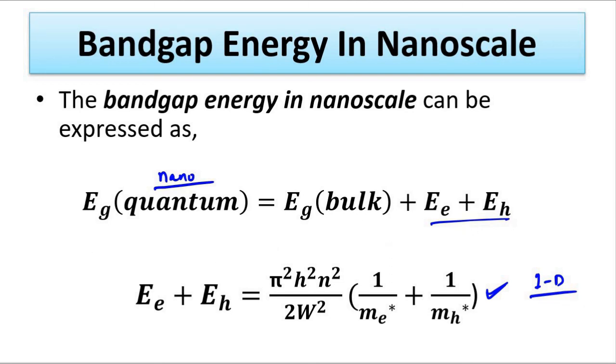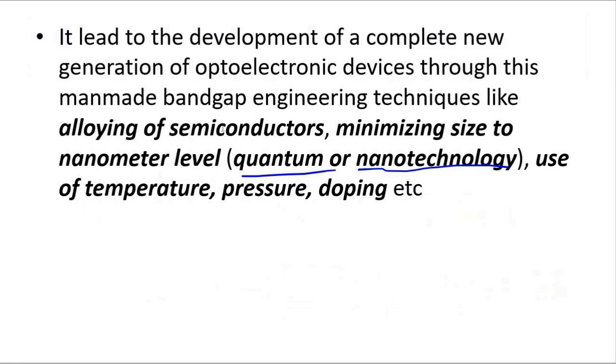This is the basic principle. We have now covered all the band gap modulation methods: alloying or compound semiconductors, nanotechnology or quantum size effect, and the use of temperature, pressure, and doping, that is extrinsic semiconductors. I hope you liked this video. Please subscribe to my channel Engineering Tutorial for more videos related to engineering, science, and technology. Have a great day. Thank you very much.